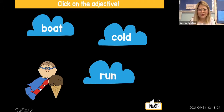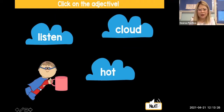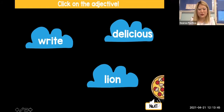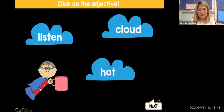Next noun is a mug, and the mug is pink but there's no pink here. The words that we have here are listen, cloud, and hot. What do you think is the best adjective that can describe our mug — is it listen, cloud, or hot?